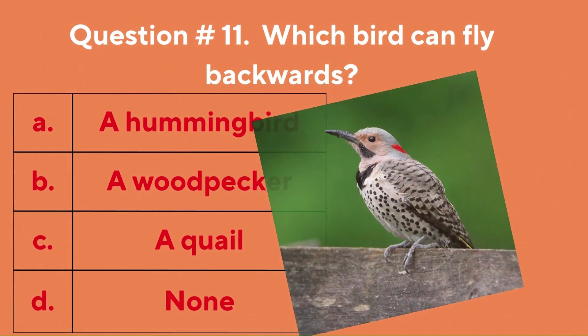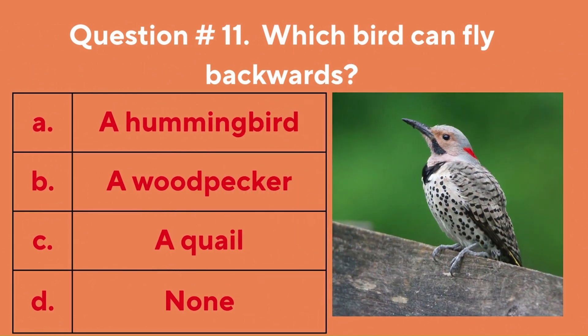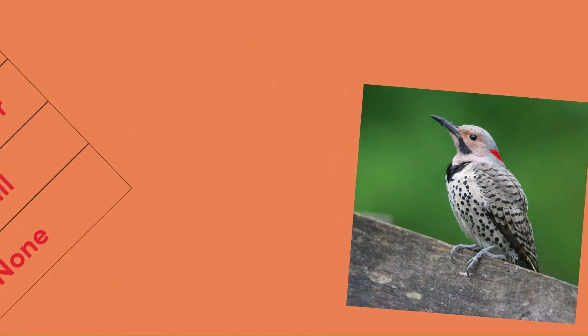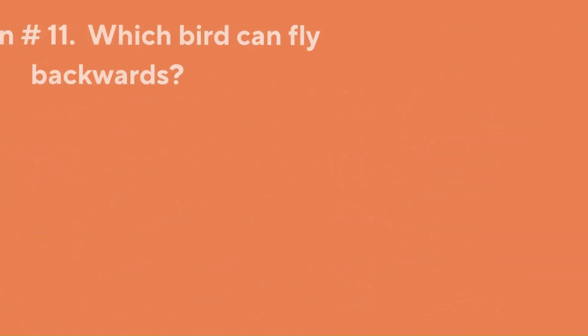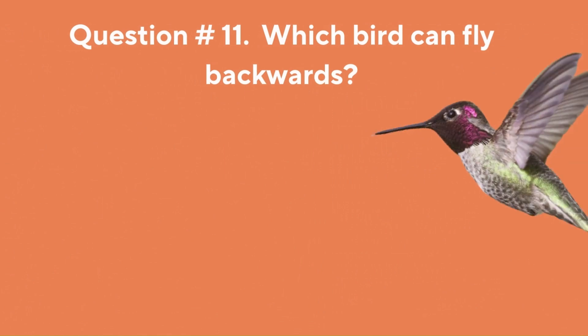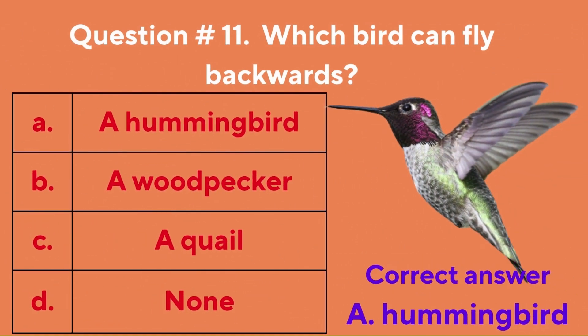Question number eleven: which bird can fly backwards? A. A Hummingbird, B. A Woodpecker, C. A Quail, D. Inan. The correct answer is A. Hummingbird.